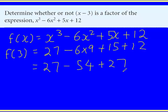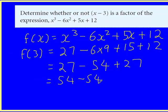That would be 27. Putting the 27's together, 54 take away 54. So, what we have shown is that f(3) equals 0.